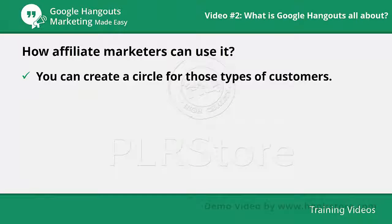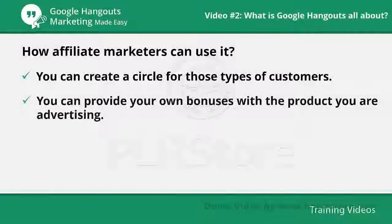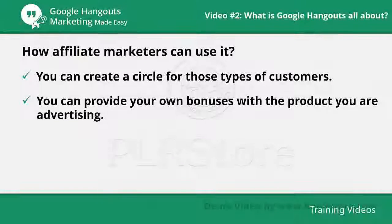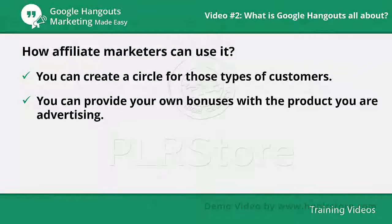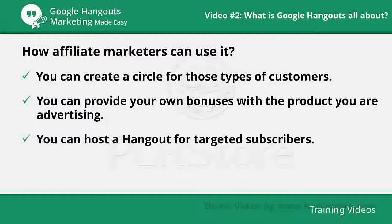You can include the best affiliate product review links to your Google Plus profile. You can provide your own bonuses with the product you are advertising, add the images of those bonuses in status updates and share. You can also link the status update to your review post.